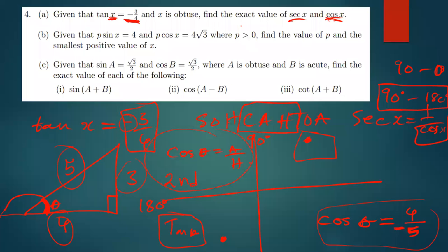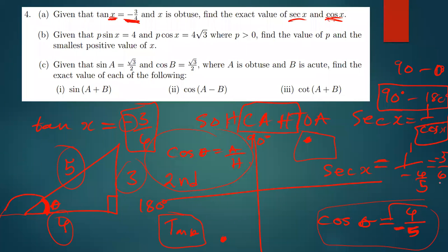The same applies to sec. Since sec x equals 1 over cos x, we get 1 over negative 4 over 5, which gives negative 5 over 4 — simply the reciprocal of cos x.